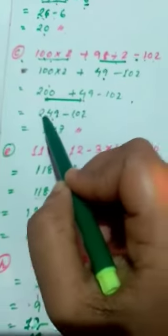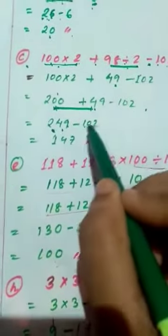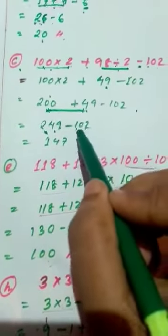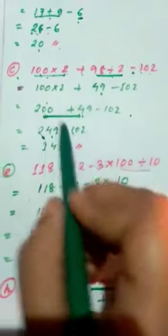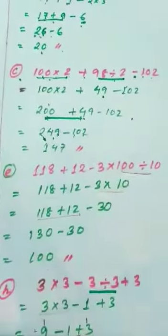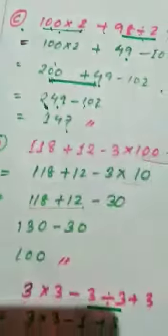Now we have to add: 200 plus 49 is 249. Now we subtract 100 from 249. You can see here: 9 minus 2 is 7, 4 minus 0 is 4, 2 minus 1 is 1. So the result is 149. We can write that here. Students, let's move to our next question.